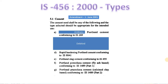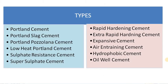Now let us see an introduction to the types of cement. As per IS codes: Ordinary Portland Cement conforms to IS 269, Rapid Hardening Portland Cement to IS 8041, Portland Slag Cement to IS 455, Portland Pozzolana Cement fly ash based to IS 1489 Part 1, and Portland Pozzolana Cement calcined clay based to IS 1489 Part 2. As per IS 456:2000, the common types include Portland Cement, Portland Slag Cement, Portland Pozzolana Cement, Low Heat Portland Cement, Sulfate Resistant Cement, Super Sulfate Cement, Rapid Hardening Cement, Extra Rapid Hardening Cement, Expansive Cement, Air Entraining Cement, Hydrophobic Cement, and Oil Well Cement.